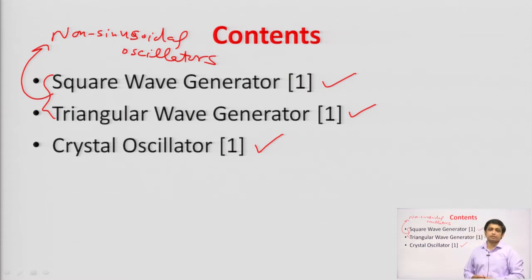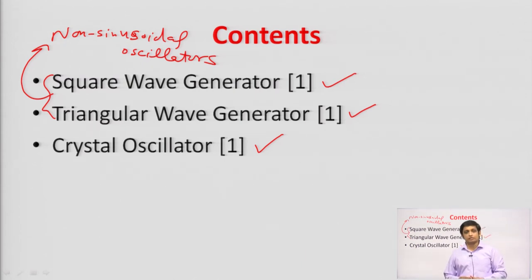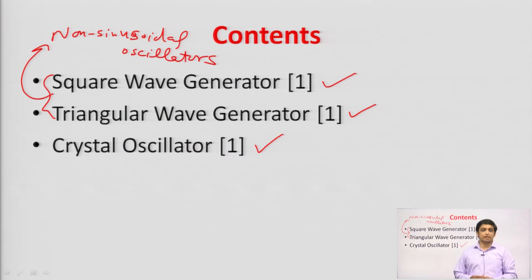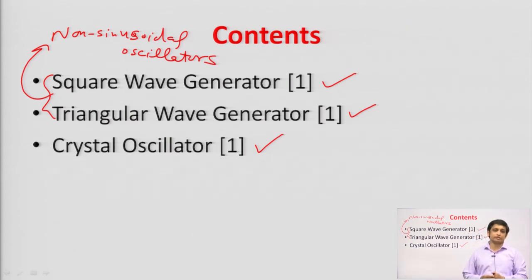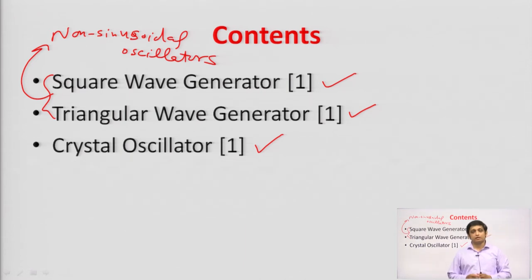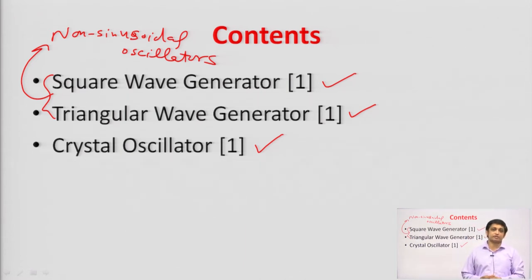Before this class I had discussed RC and LC oscillators. In RC oscillators we had seen that it generates a sine wave, and after that I had discussed LC oscillators. That contains inductor and capacitor, while RC contains resistor and capacitor. In RC oscillators we had seen Wien bridge oscillator and phase shift oscillators.